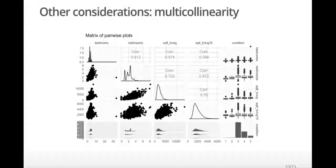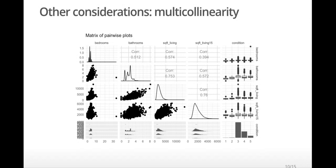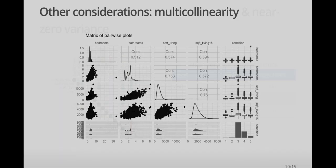Correlation among predictor variables can lead to useful predictors appearing insignificant and vice versa. So, we want to be careful about using highly correlated variables in linear regression. One way we can examine this is through a matrix of pairwise plots. The ggpairs function from the GGally library can help us do this. Note that with large data sets, this can take quite a while to run. Here we notice that square feet of living and square feet of living 15 have a correlation of 0.76, which is quite high.